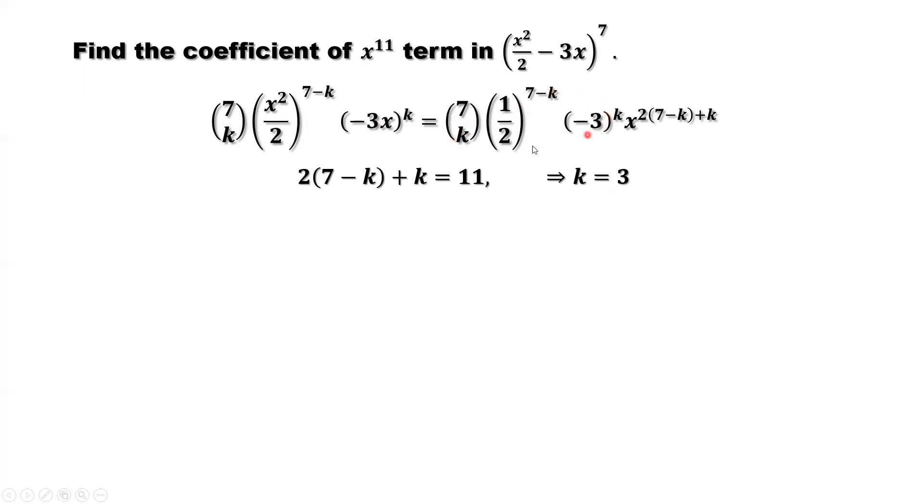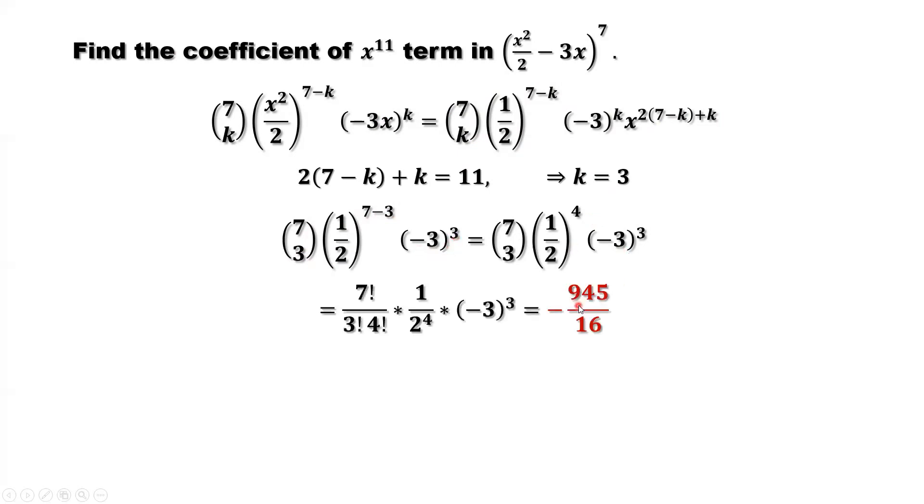We find k equals 3. Just replace k by 3 here. That's the constants we call the coefficient of x to the power 11. 7C3 is 7 factorial over 3 factorial times 4 factorial, times (1/2)^4, times (-3)^3.